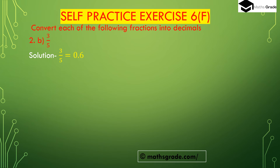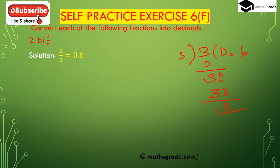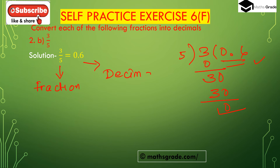Part b: 3 divided by 5. We perform long division. 5 does not go into 3, so we place a decimal and add a zero to get 30. 5 times 6 is 30, remainder 0. So 3 divided by 5 is 0.6.